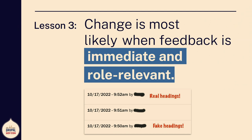Lesson three: change is most likely when feedback is immediate and role-relevant. This is a screenshot from the revisions log that I took because I was so excited. At 9:50 a.m. on October 17th, someone saved that node with fake headings. At 9:51, they did something. At 9:52, they did something again — this time with no fake headings. I know that Editoria11y attacked them. It took them two tries to get it right, but within 120 seconds that node had headings. If I had emailed them the next week, it either would never have been fixed or would have been fixed much later. Now it's work in the past. Because they were in their flow of writing, hit save to preview their content, and said 'oops, I didn't put headings.' That is what you want.